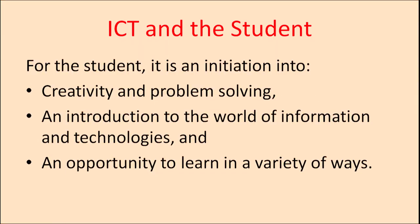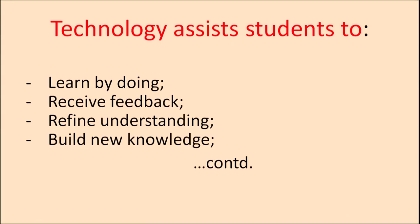An opportunity to learn in a variety of ways — there can be videos, audios, and a number of online objects that students can use. They must learn how to use them to the best of their benefit. Technology assists students in a number of ways. Learn by doing — students are doing things by themselves: they can make projects, do simulations, go to any website and get any kind of information they want.